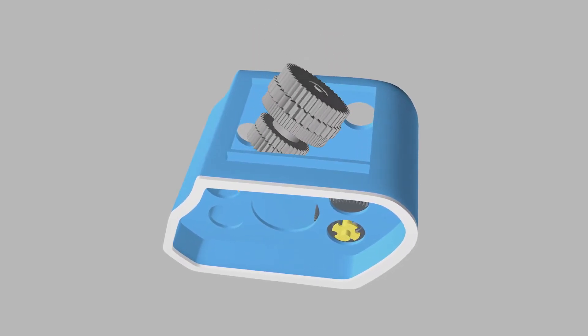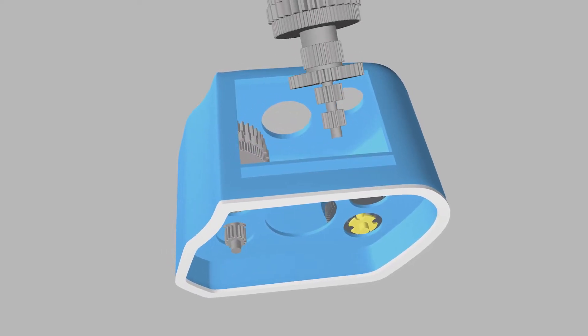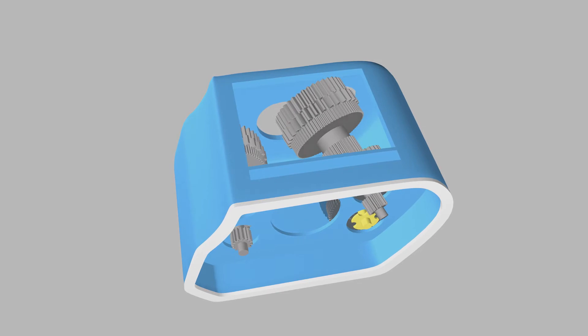Start with the lower reverse idler gear and shaft, which is already pre-assembled into the main housing. Then install the lower countershaft followed by the upper countershaft.